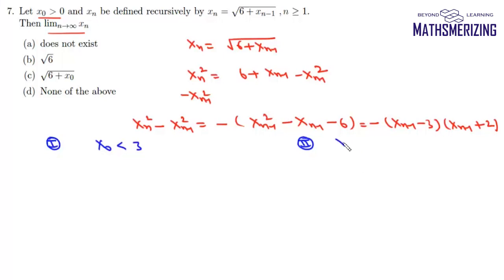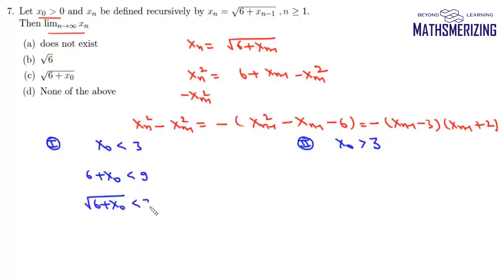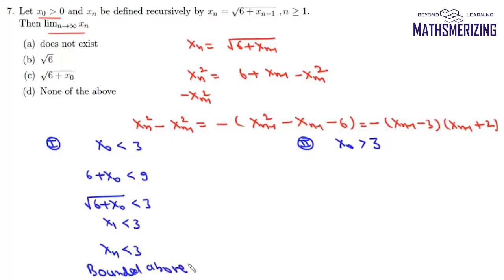Case two: if x₀ is greater than three. Now if x₀ is less than three, then six plus x₀ is less than nine, that is the square root of six plus x₀ is less than three. So x₁ is less than three, and by the same iteration xn is less than three. In that case, the sequence is bounded above.